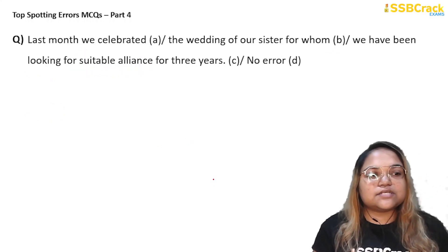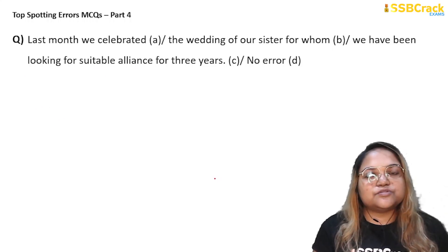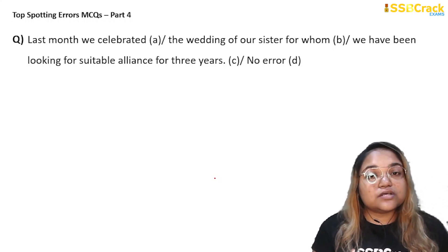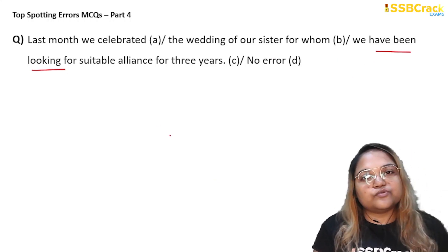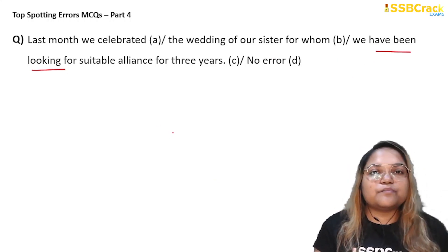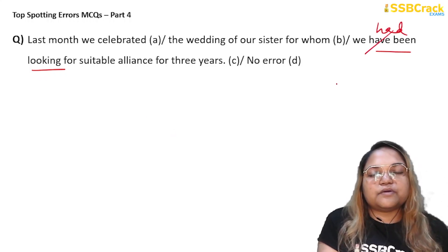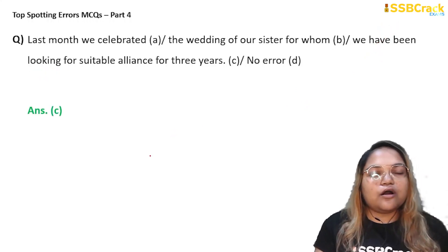Next question: 'Last month we celebrated the wedding of our sister for whom we have been looking for a suitable alliance for three years.' Since the wedding was last month — a past event — the action of searching is also completed in the past. 'Have been looking' (present perfect continuous) is incorrect here. It should be 'had been looking' (past perfect continuous) to reflect the search that preceded the past event. Answer: option C.